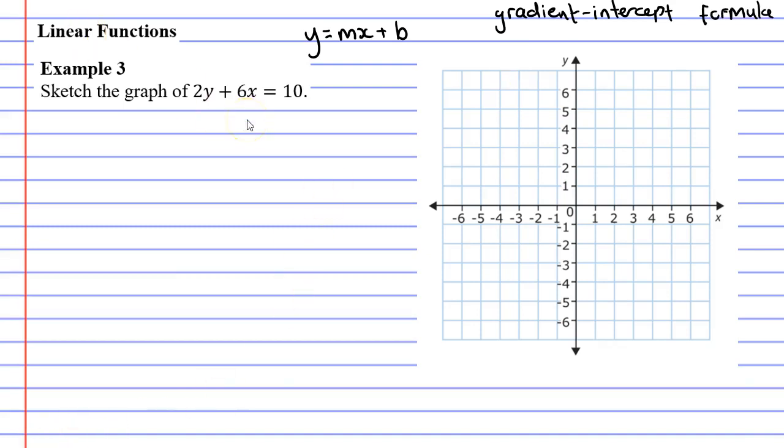This formula is called the gradient intercept formula. Why do we call it that? The reason is because it has numerals that stand for gradient and the y-intercept. The m stands for gradient and the b stands for the y-intercept.